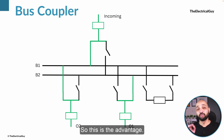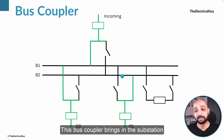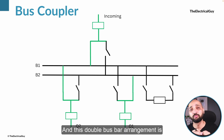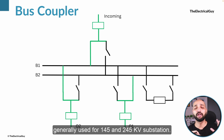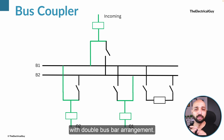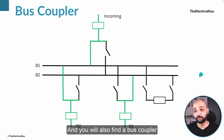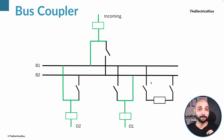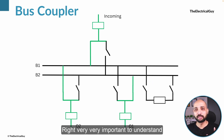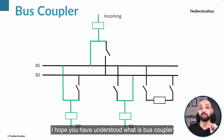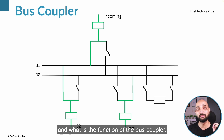This is the advantage the bus coupler brings to a substation — very important. This double bus bar arrangement is generally used for 145 kV and 245 kV substations. You will find the majority of substations at these voltage levels with a double bus bar arrangement, and you will also find a bus coupler bay installed in them. I hope you have understood what a bus coupler is and what its function is.